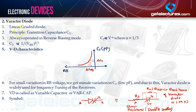Let's move on to the varactor diode. The varactor diode is basically a linear graded diode. Its principle is based on transition capacitance CT, where CT is proportional to V to the power minus N. For a graded PN junction, N should be equal to 1/3 — N is basically the grading coefficient. CT is proportional to 1 divided by the cube root of VRB.